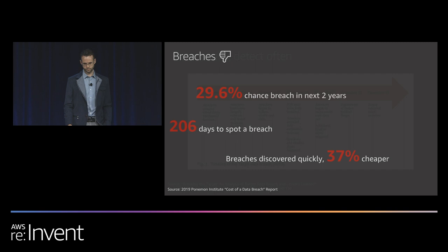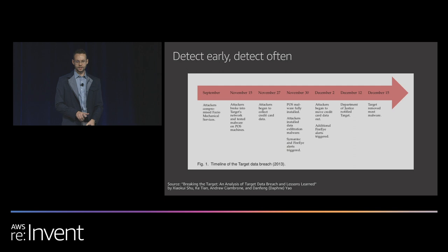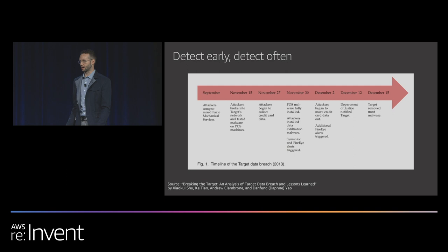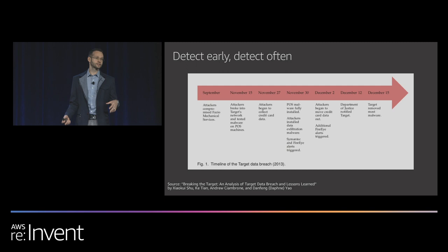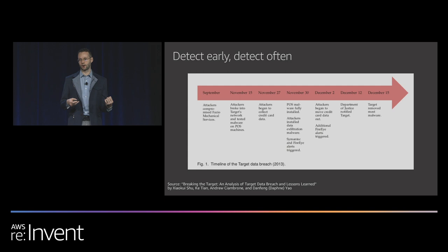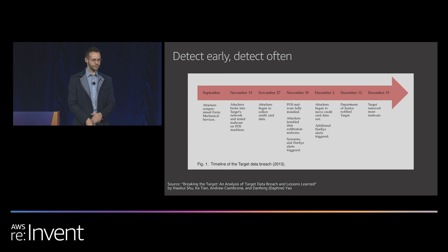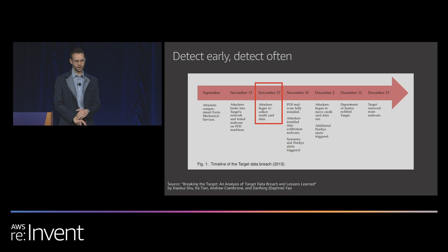Here's something really interesting from the Target breach. At the time, Target was the second biggest data breach that had ever happened — this is 2013. Attackers compromised a third party that Target was using, and used that elevated privilege to get into Target's network and start installing malware on point-of-sale systems. The idea was to collect credit cards. On November 27th, attackers actually began to collect credit card data from the malware they'd installed on the point-of-sale systems.